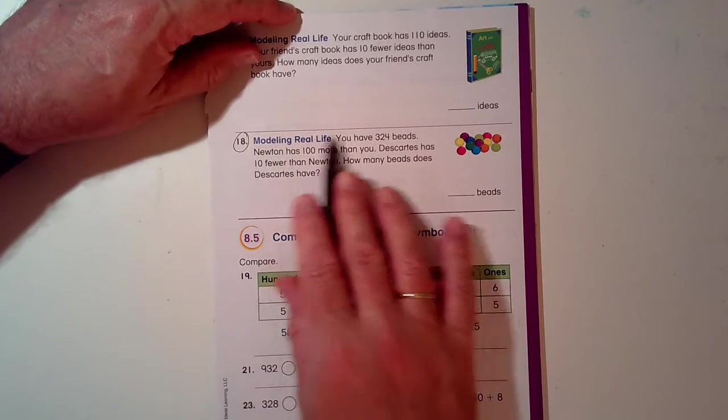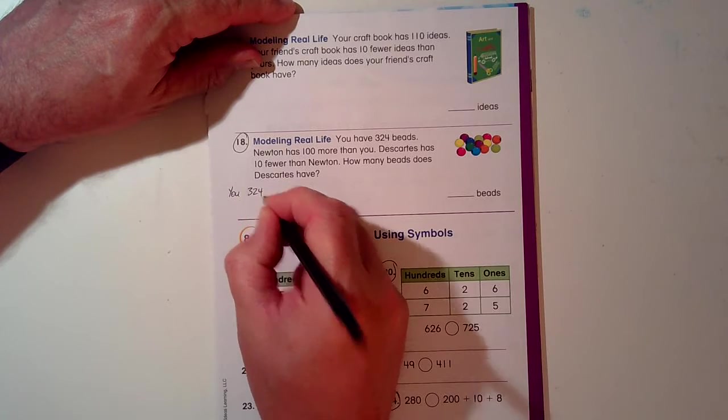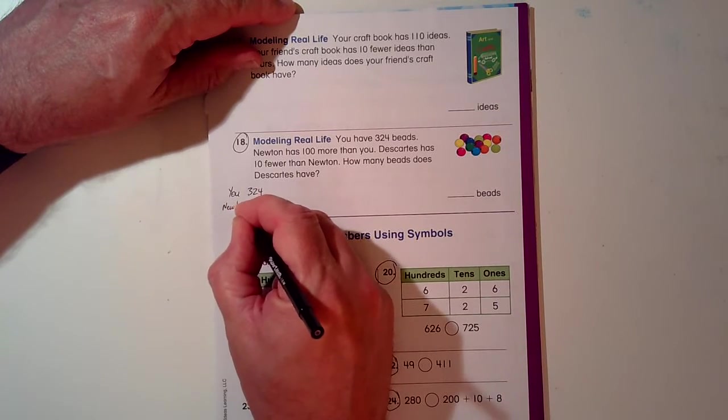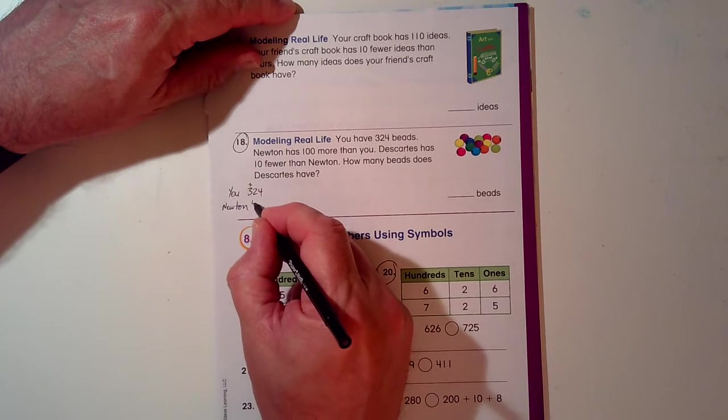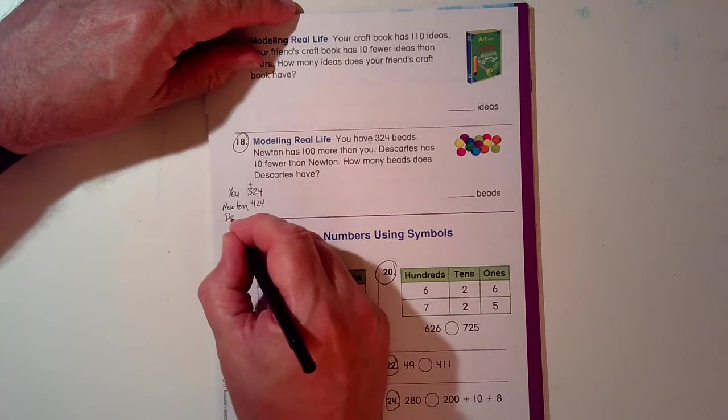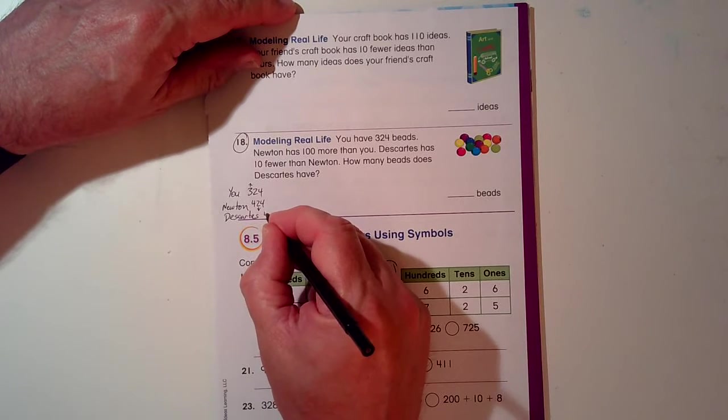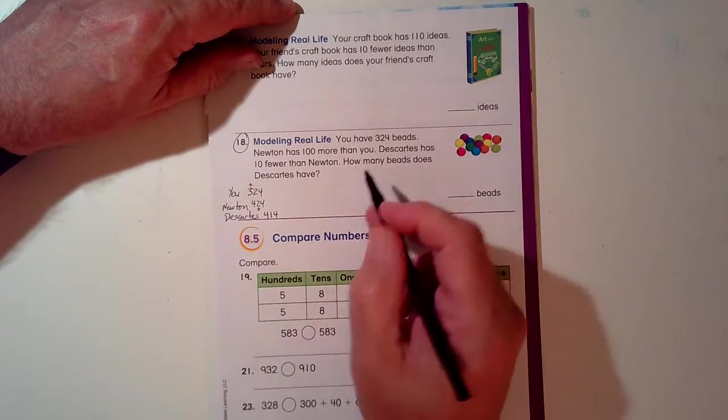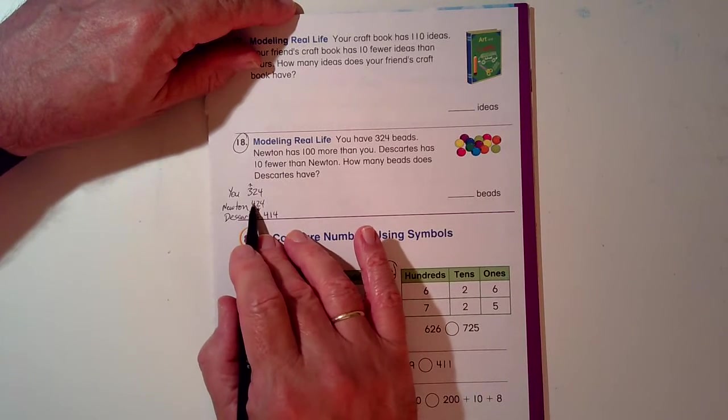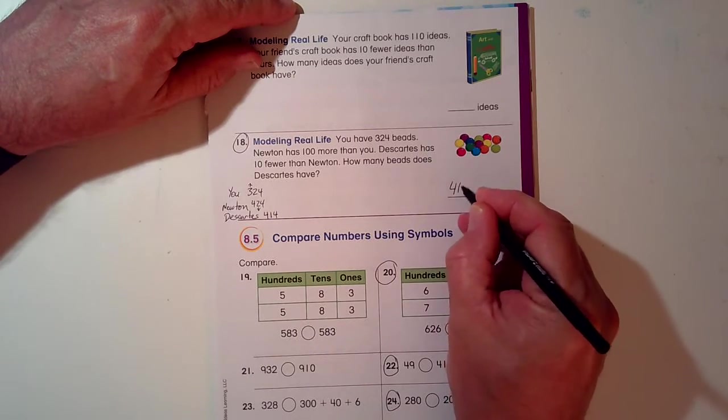Modeling Real Life, number 18. You have 324 beads. Newton has 100 more than you, so Newton has 100 more. The hundreds place more, that goes up, 424. Descartes has 10 fewer than Newton. Descartes, 10 fewer. So the tens place fewer, down 4, and then goes down 1 to 414. How many beads does Descartes have? You have 324. Newton has 100 more than you. Descartes has 10 fewer than Newton. 414 beads.